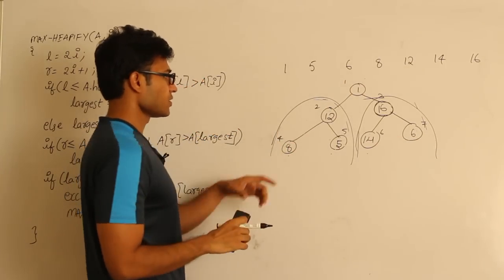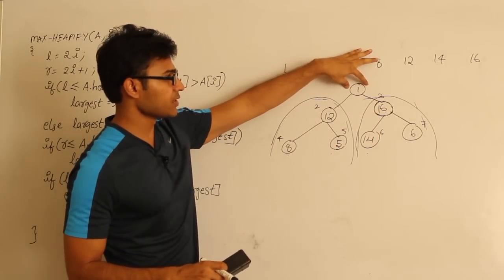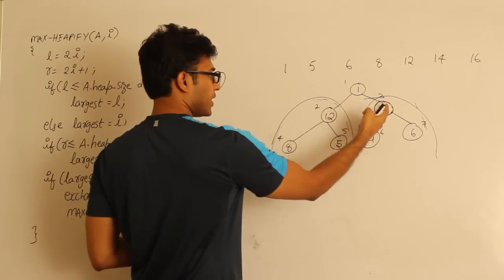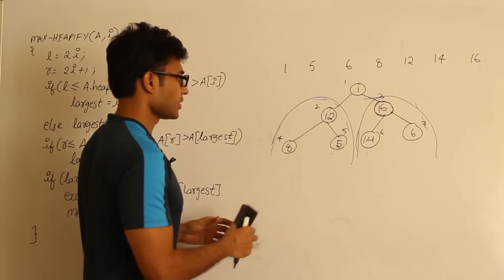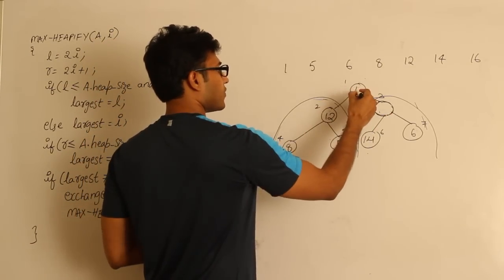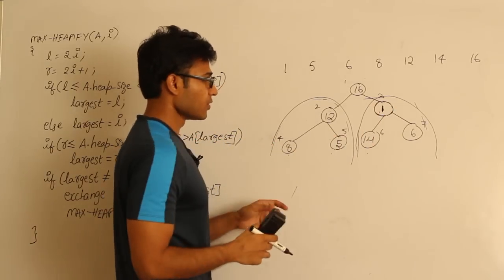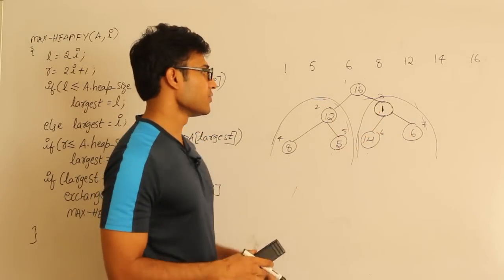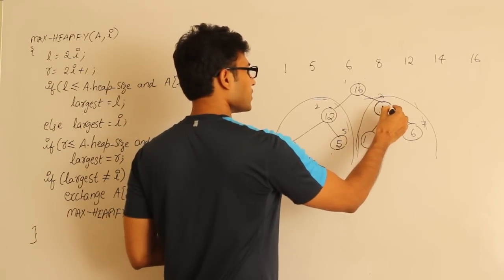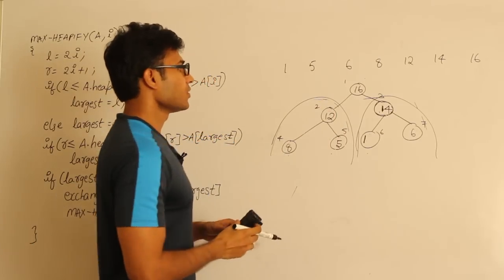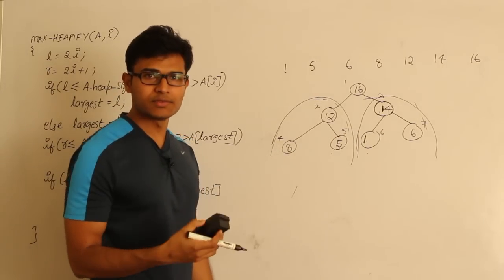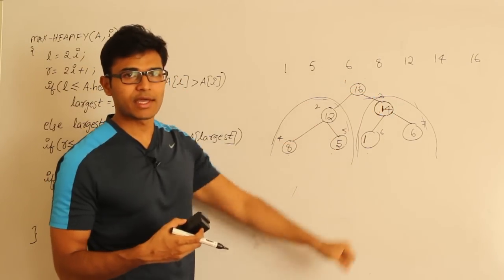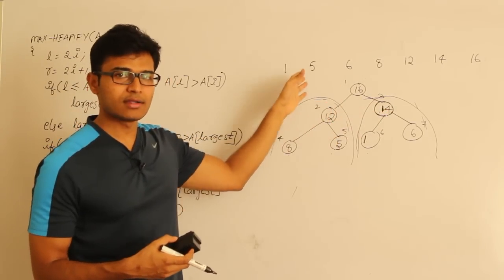Now go to index 1 (the root). Its left and right subtrees are both max heaps, but root value 1 violates the property. The maximum among 1, 12 (left child), and 16 (right child) is 16, so swap 16 up and 1 down. Now 1 is at the position formerly held by 16. Check again: compare 1 with its new children; 14 is the maximum, so swap 14 up and 1 down. The entire array is now a max heap.